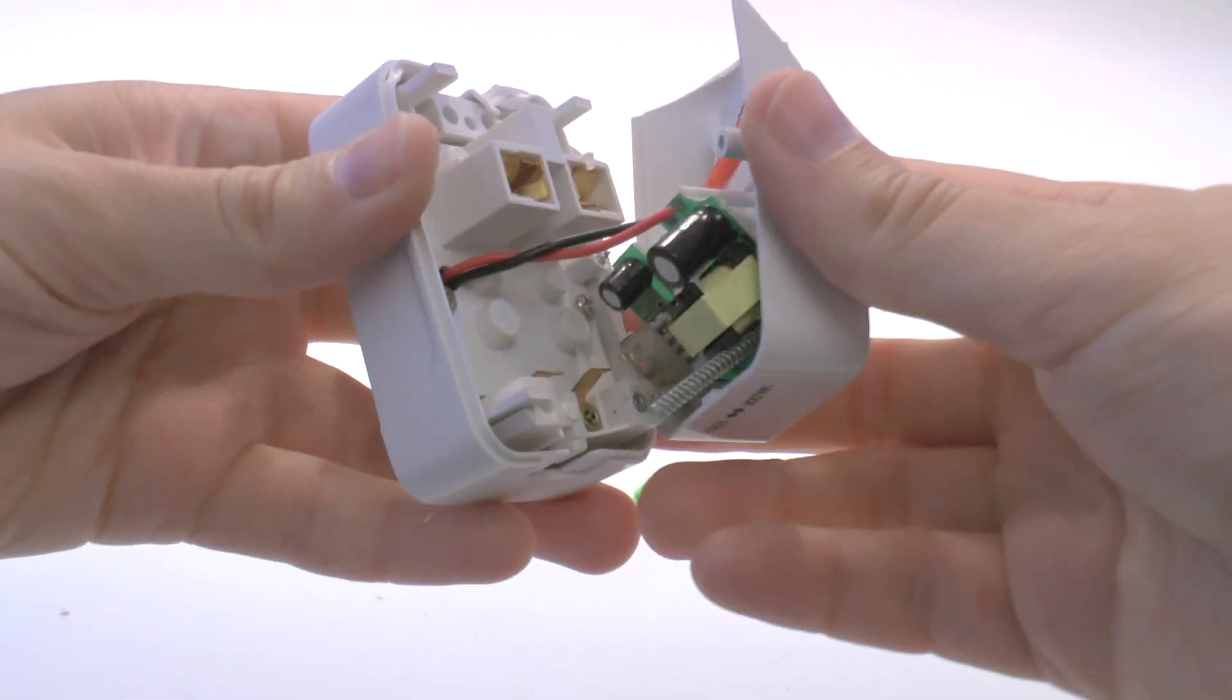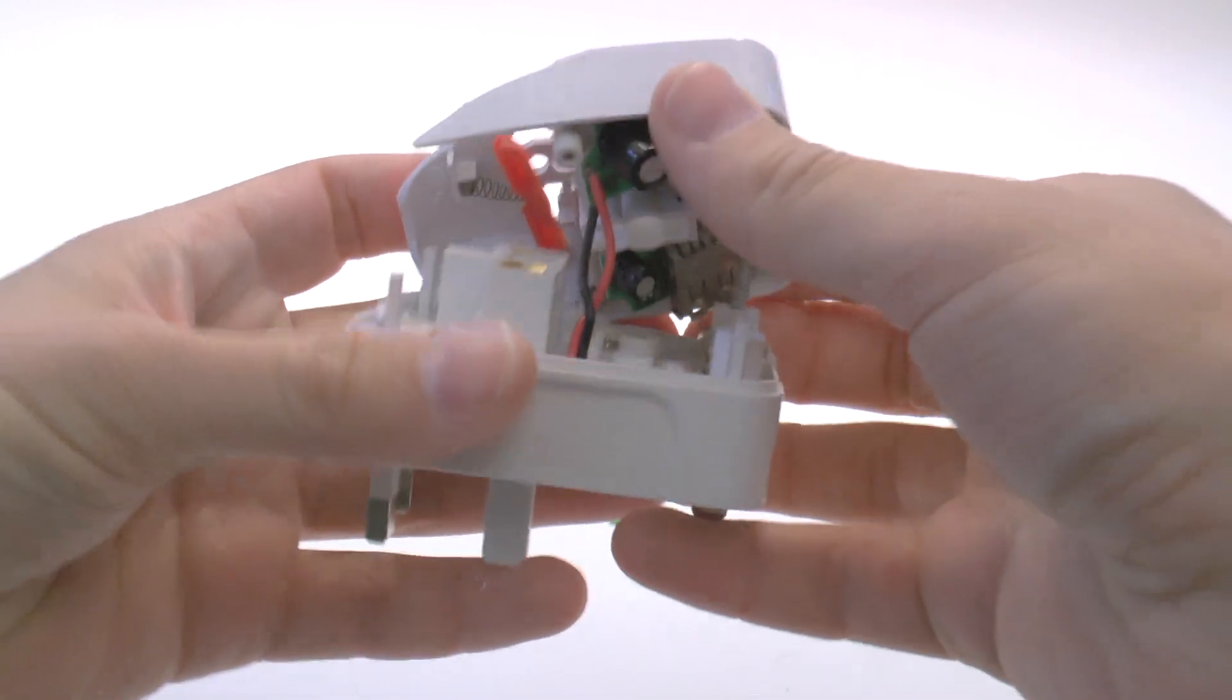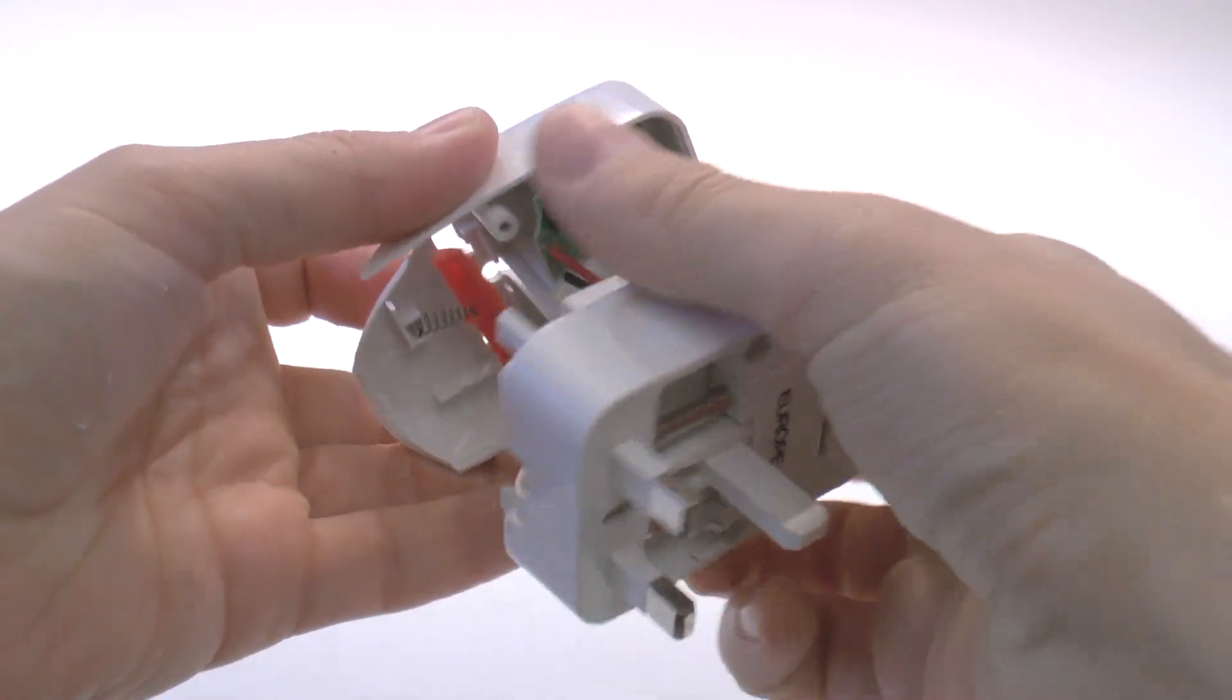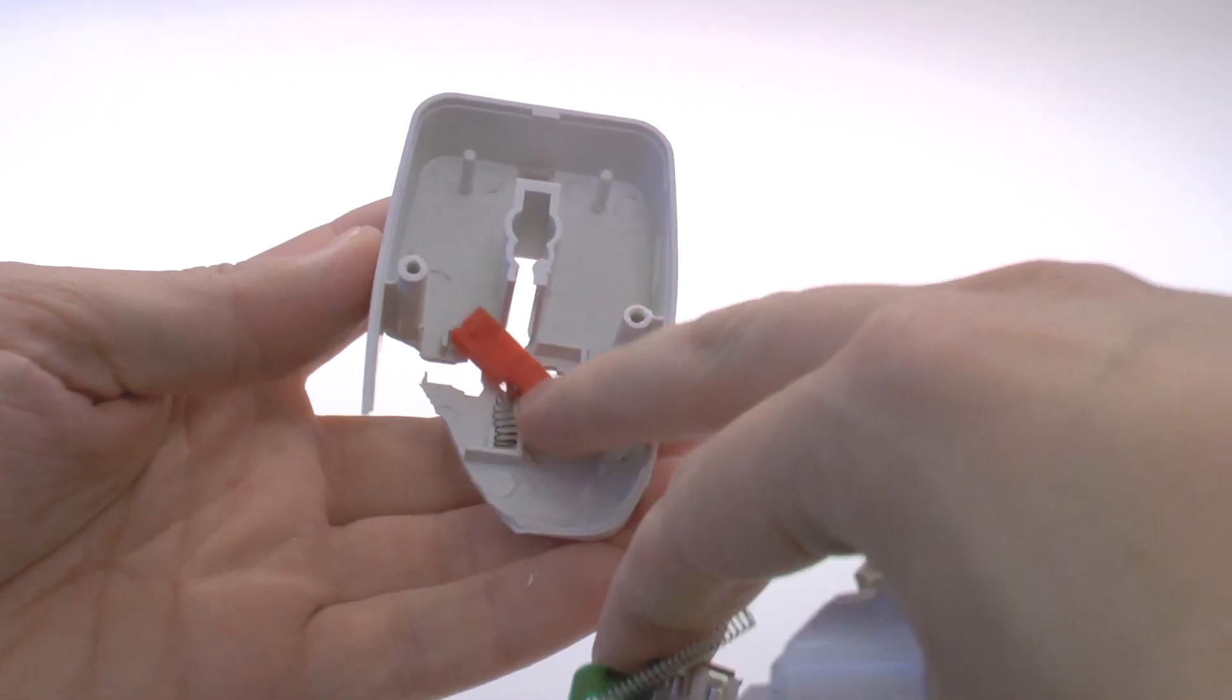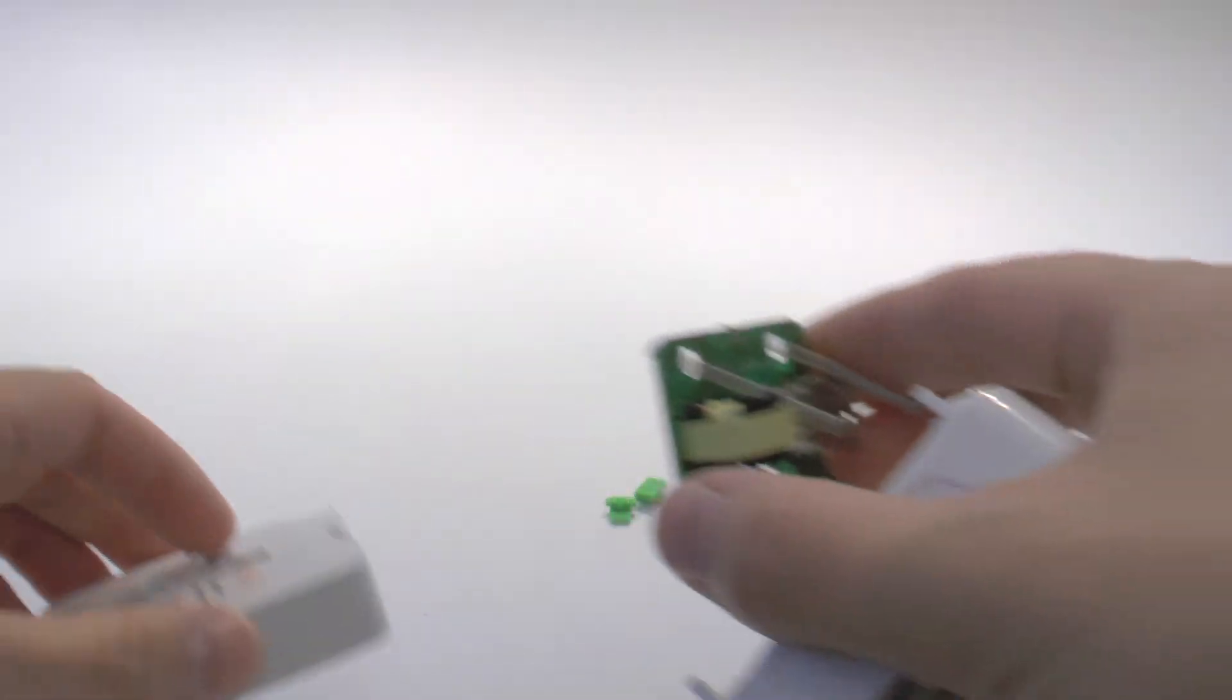The little circuit board is for the USB port. By the way, the USB adapter in this thing is so bad, it can't even charge my phone. I measured the output current at barely 200mA.